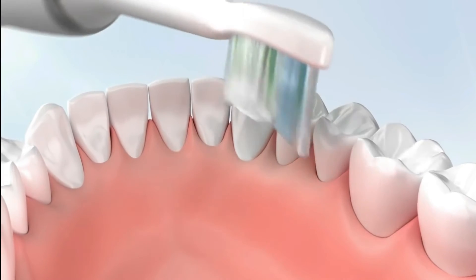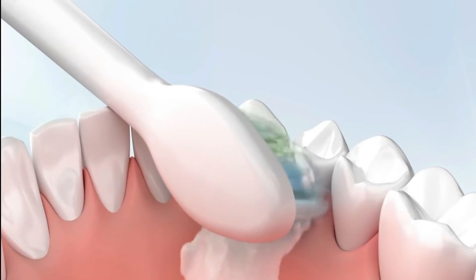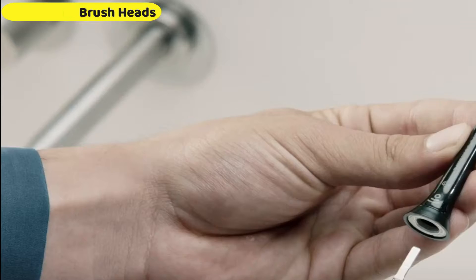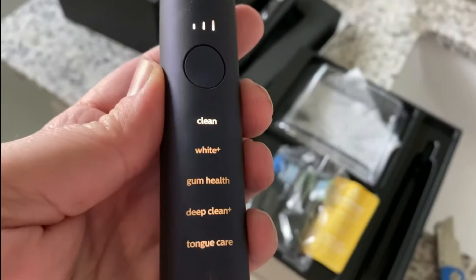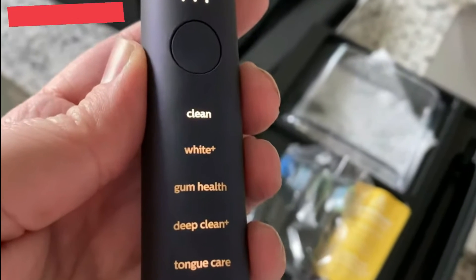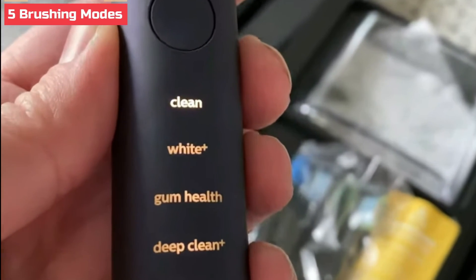The Philips Sonicare Diamond Clean Smart Rechargeable Toothbrush gives the greatest plaque removal, gum health improvement, and whitening performance with the four premium brush heads, thanks to sonic technology that gently eliminates plaque. Five brushing modes and smart brush head mode matching technology.